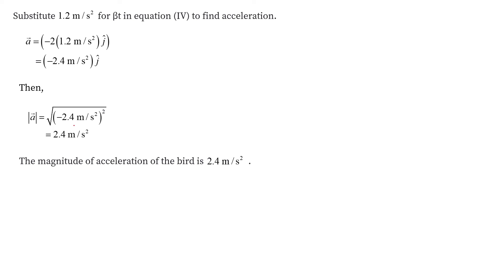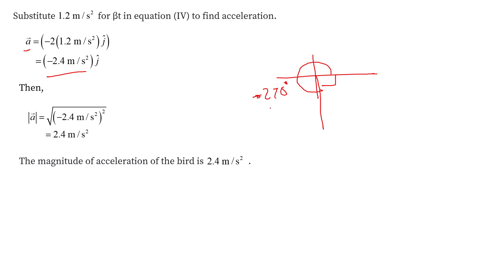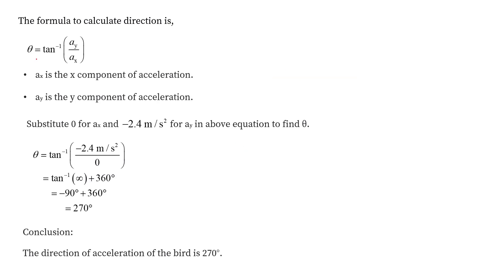For the acceleration at t=2 seconds, the acceleration is purely in the y-direction, so the magnitude is 2.4 m/s². The negative sign indicates it points in the −y direction. The direction angle is −90° (clockwise from positive x-axis) or 270° measured counter-clockwise from the positive x-axis.